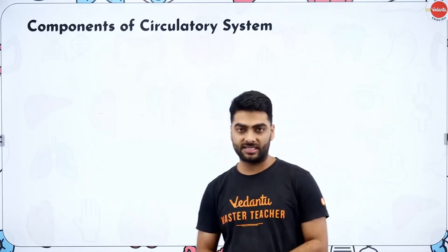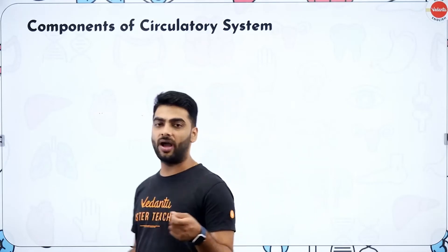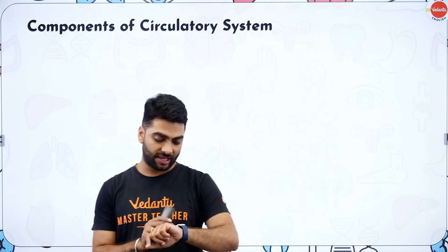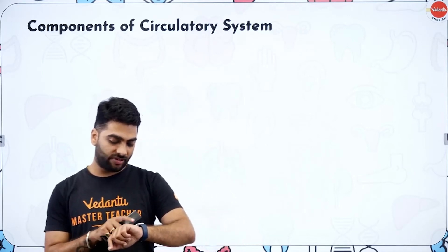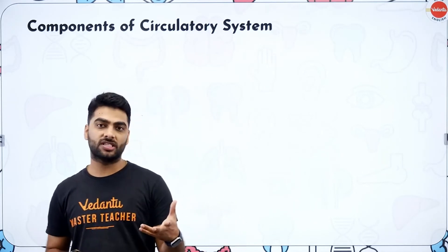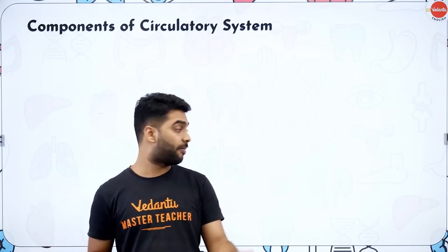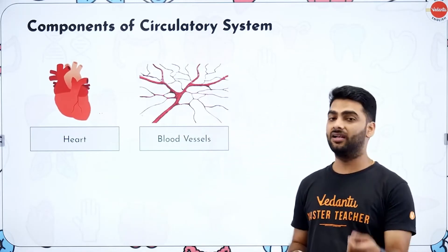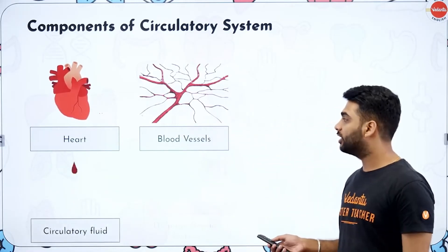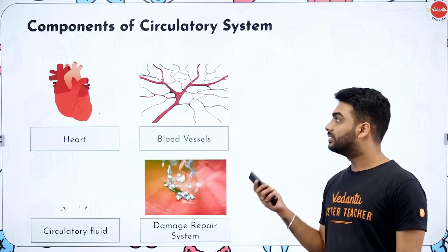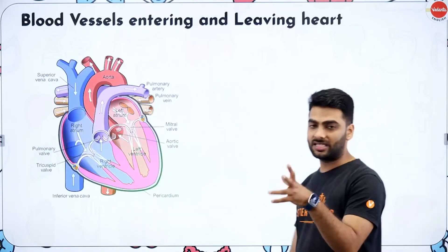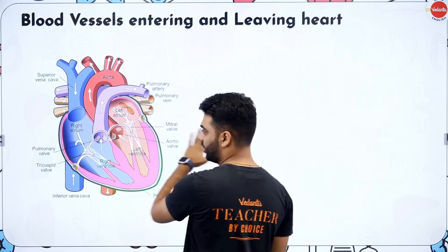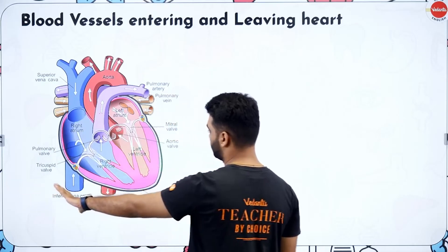The circulatory system is required for the transport of nutrients, waste, and gases. Its components include the heart (the pumping organ), blood vessels — arteries, veins, and capillaries — and blood. The heart is a four-chambered organ: the left side is the oxygenated chamber and the right side is the deoxygenated chamber.